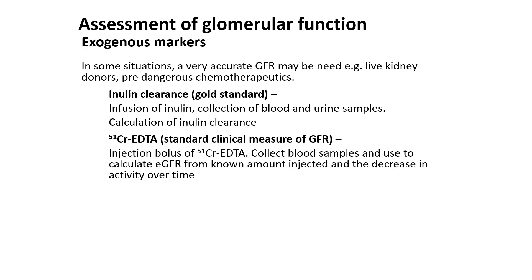The assessment of glomerular filtration also involves exogenous markers. In some situations a very accurate GFR may be needed, such as for kidney donors or prior to dangerous chemotherapeutics. Examples include inulin clearance, which is the gold standard, involving infusion of inulin and collection of blood and urine samples to calculate inulin clearance. You also have EDTA, which is a standard clinical measure of GFR, involving collecting blood samples to calculate estimated GFR from a known amount injected and the decrease in activity over time.